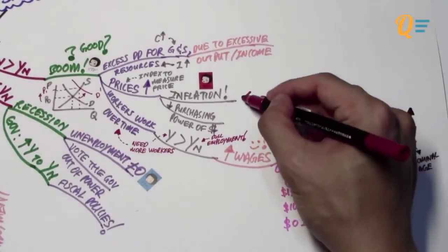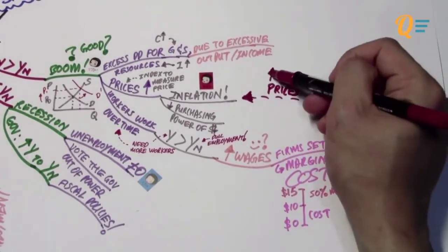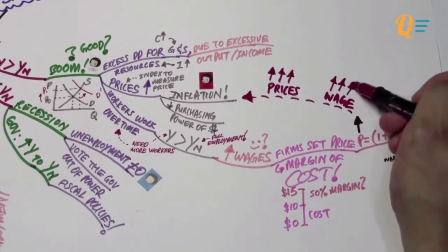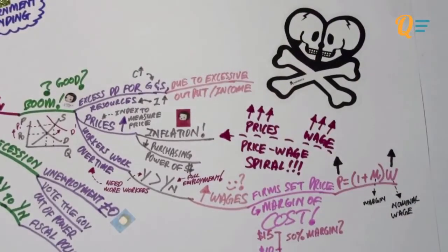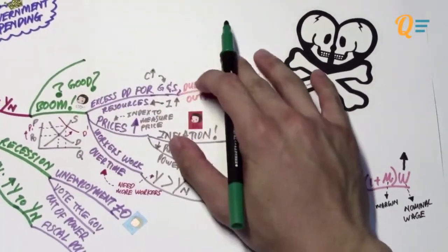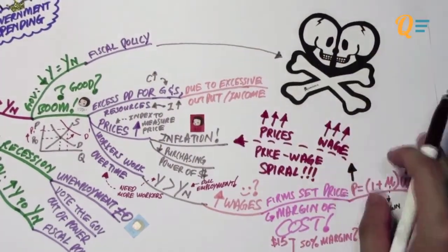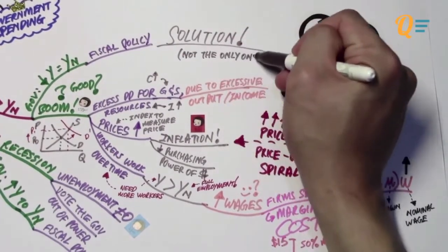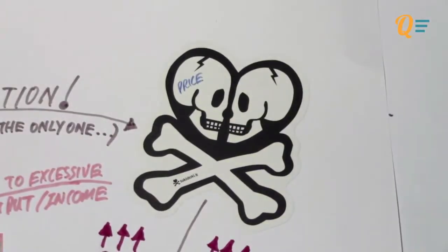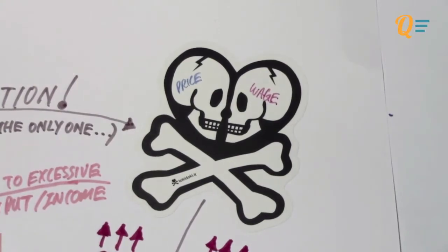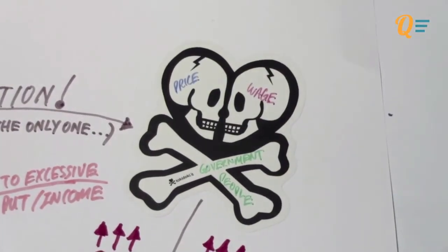An increase in wages causes an increase in price, and the increase in price also causes an increase in wages — both factors cause each other to increase, known as the price-wage spiral. To prevent this from going out of control, the government will have to reduce the income level back to the potential level using fiscal policy. Prices and wages can seriously damage an economy, and the government and people are stuck in this double whammy of increasing prices and wages.